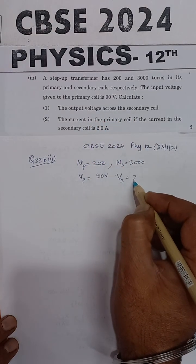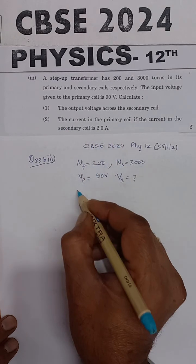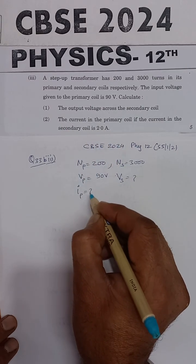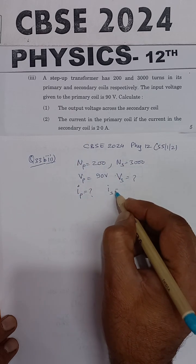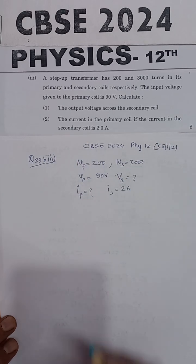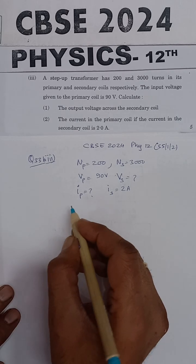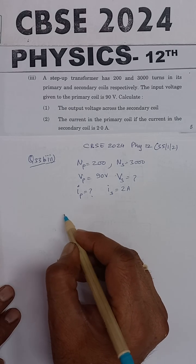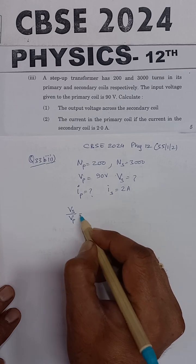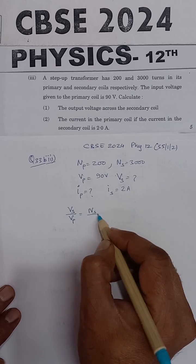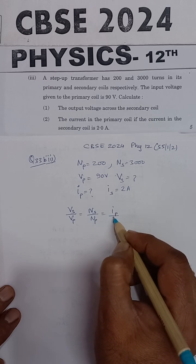We have to calculate Vs, the output voltage across the secondary. We also need to find the current in the primary, Ip, given that the current in the secondary coil is 2 amperes. The formula we will use is: Vs upon Vp is equal to Ns upon Np, which is equal to Ip upon Is.